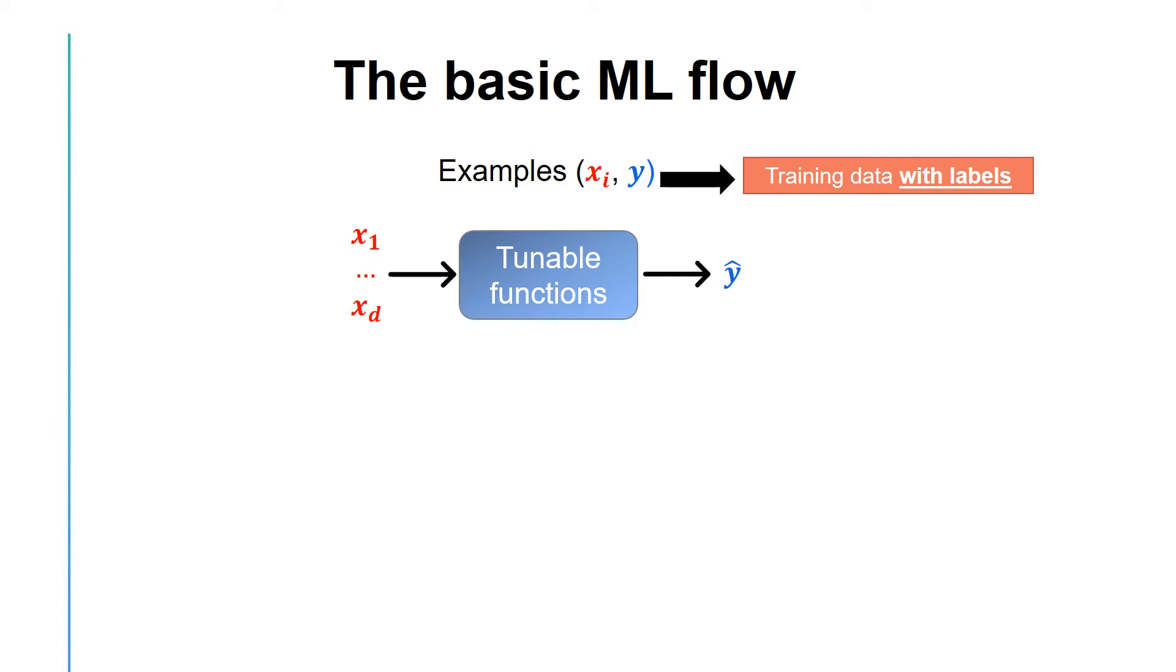To do so, we select or tune the parameters theta i of a function f in a way to minimize the training error. Another way to look at this process is that we are selecting one function from a collection of functions in a tunable box. However, selecting this function is not a straightforward process.